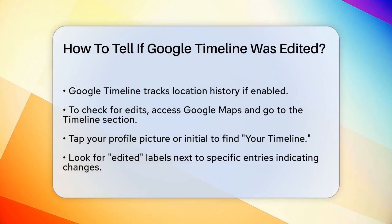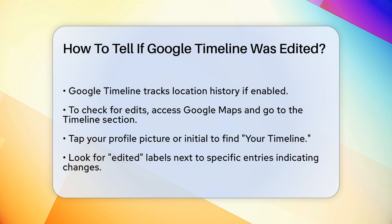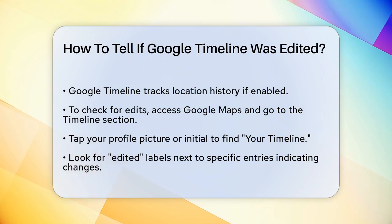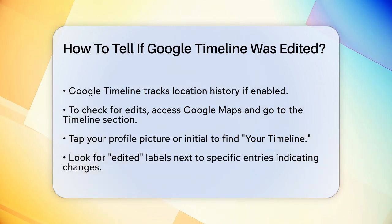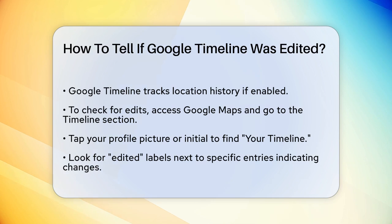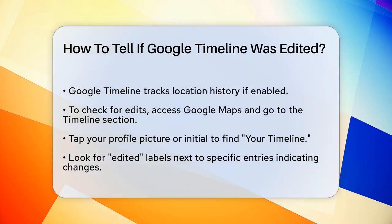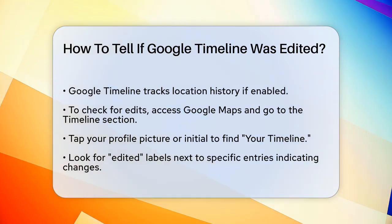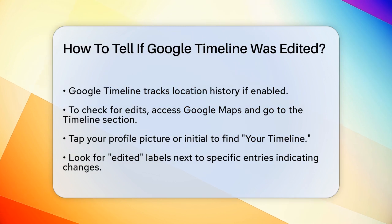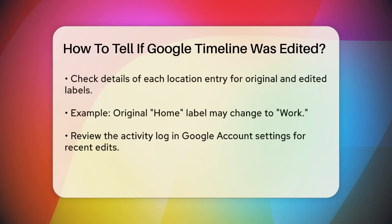To check if your timeline has been edited, you need to understand how edits are made and what signs to look for. Open Google Maps on your device and navigate to the Timeline section. You can do this by tapping on your profile picture or initial in the top right corner, then selecting your timeline.